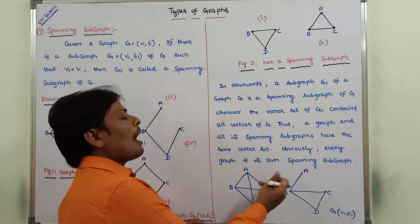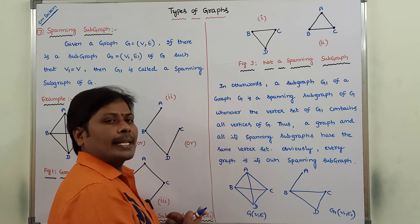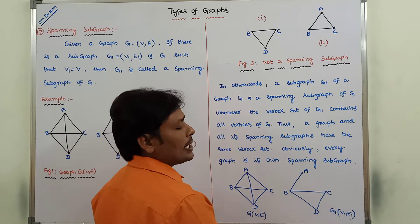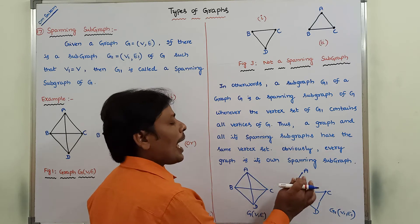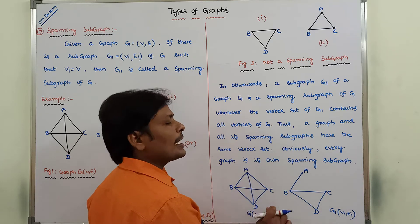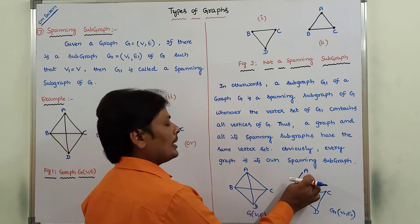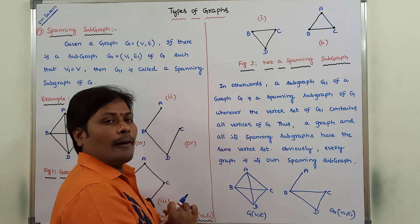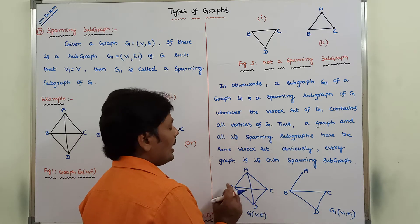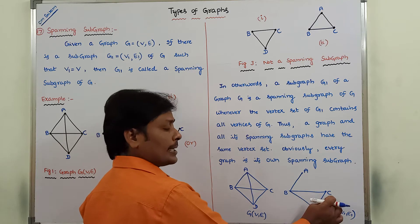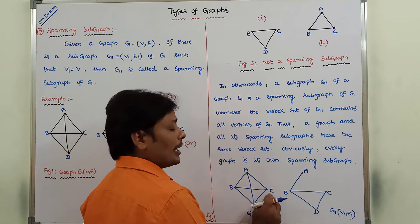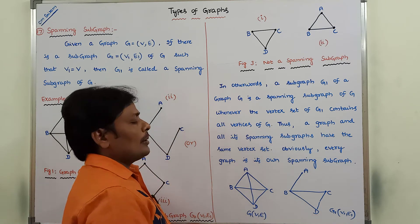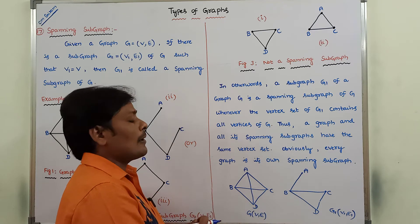We have to verify whether the first condition is satisfied or not. How many vertices are present in G1? That is four vertices. We have to verify whether G contains these four vertices or not. Vertex A is there in G1 and vertex A is also there in G. Vertex B is there in G1 and vertex B is also there in G. Vertex C is there and vertex C is also there. Vertex D is there and vertex D is also there. So the vertices present in G1 are also there in G.